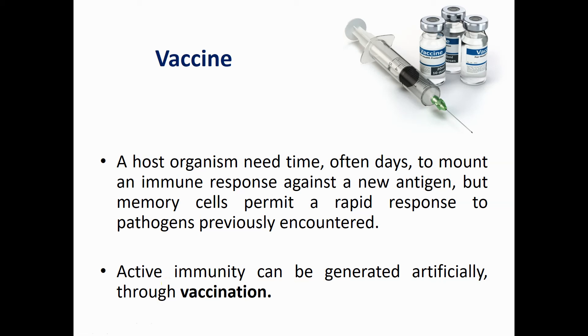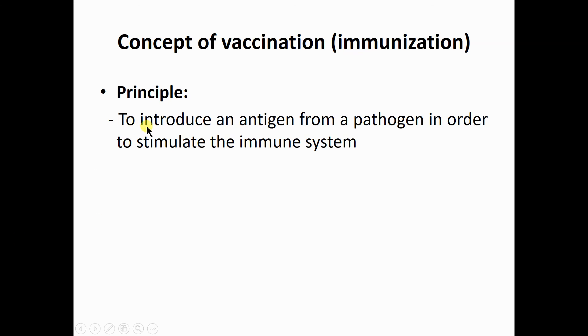Active immunity can be generated artificially through vaccination. While passive immunity is generated by antibody-rich serum for medicinal purposes, active long-term immunity can also be generated artificially through vaccination or immunization. The principle of vaccination is that we introduce an antigen from a pathogen in order to stimulate our immune system — even though our immune system has not been previously exposed to that type of antigen.